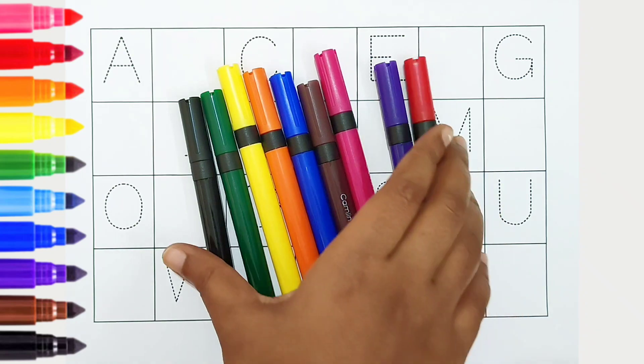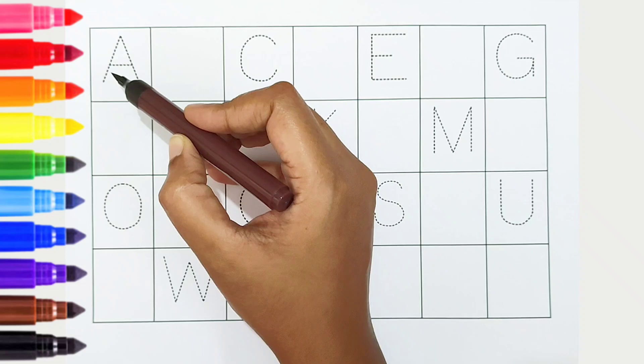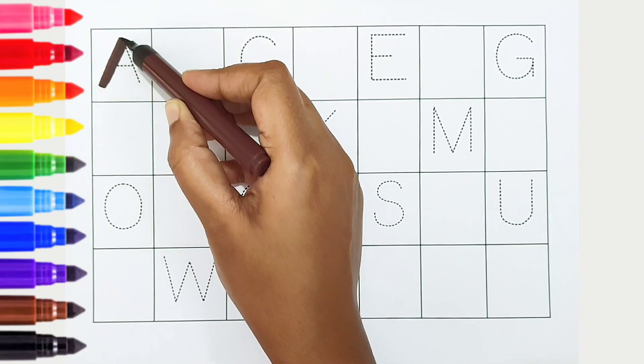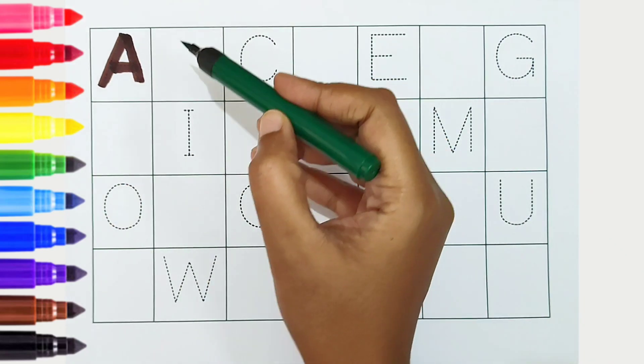Hi kids! Today we can learn the alphabets from A to Z. A, brown color, is for apple. B...